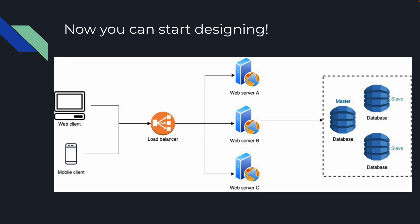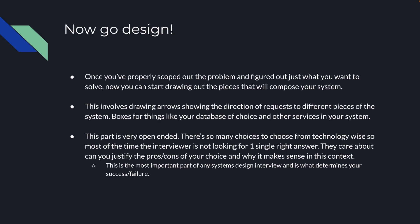Once you've properly scoped out the problem and figured out what you want to solve, you can start drawing out the pieces that compose your system. This involves drawing arrows showing the direction of requests to different pieces, boxes for things like your database of choice, and other services. This part is really open-ended — there are so many technology choices that most of the time the interviewer is not looking for one single right answer. They care about whether you can justify the pros and cons of your choice and why it makes sense in this context. This is the most important part of any systems design interview, and it determines your success or failure.